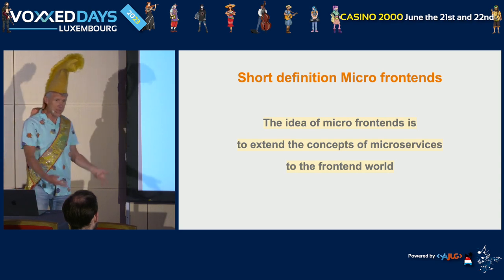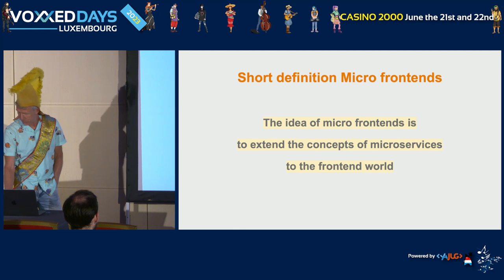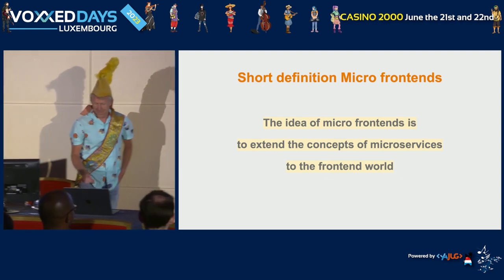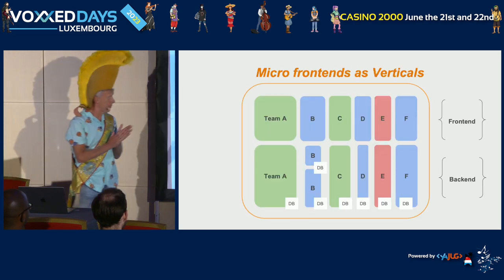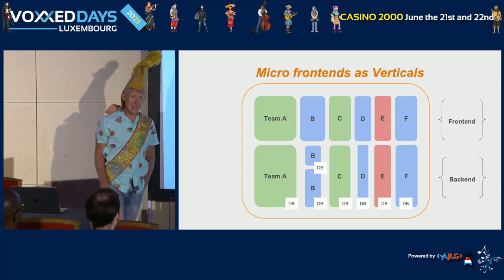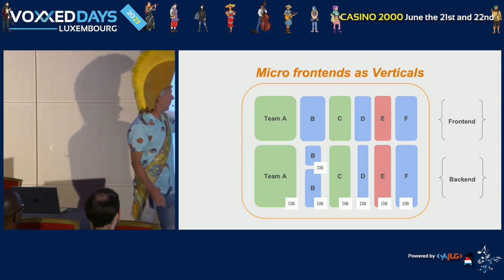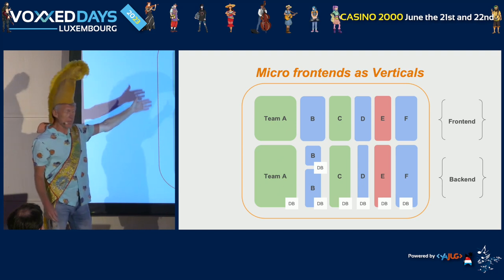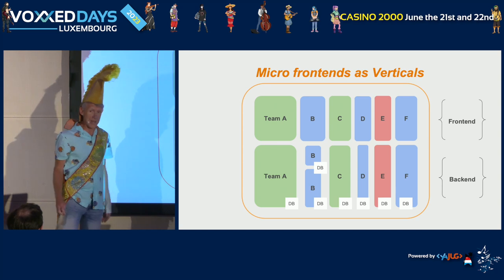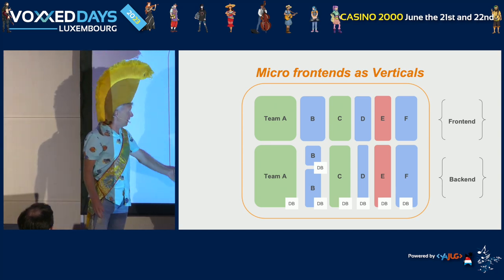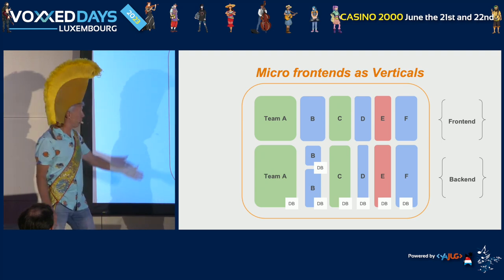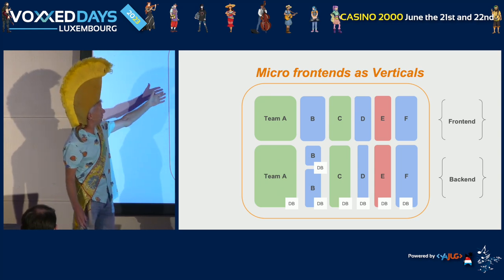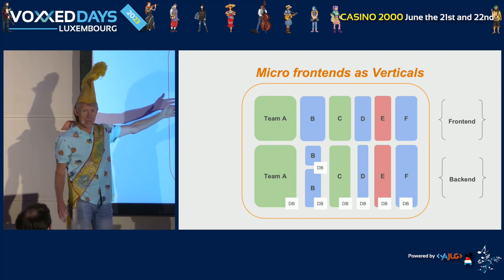The definition is that we want to extend the concepts of microservices. We split our application into verticals, and every vertical is focused on one business domain. Every micro frontend consists of front-end and back-end — everybody thinks it's about front-end only, but it's also about back-end. Every team is focused on one business domain, works independently of each other, has their own pipeline for deployment. They can choose their own framework for front-end and back-end, and the back-end has its own databases. All those micro frontends communicate with each other via events — that's the best way.